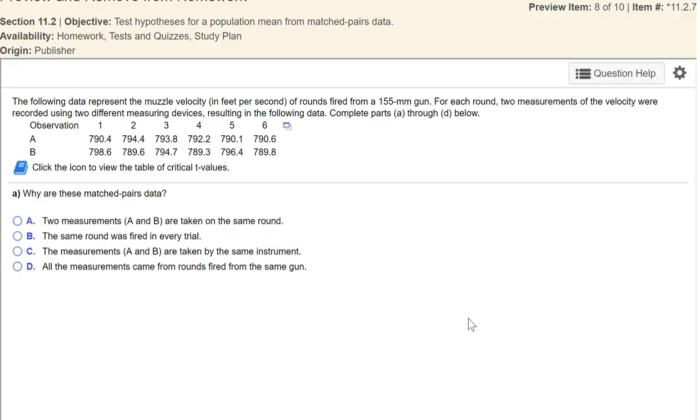The following data represent the muzzle velocity in feet per second of rounds fired from a 155-millimeter gun. For each round, two measurements of the velocity were recorded using two different measuring devices resulting in the following data. Complete parts A through D.